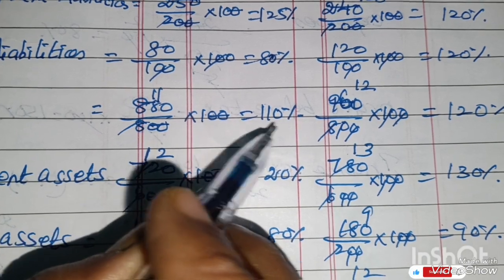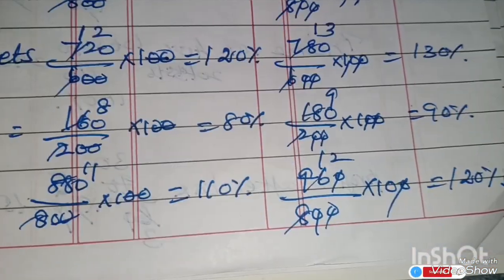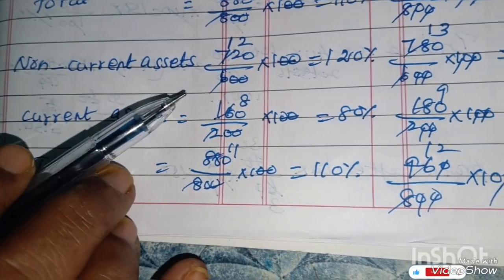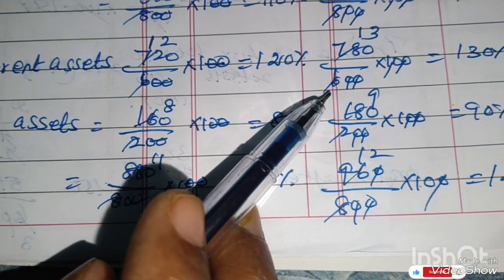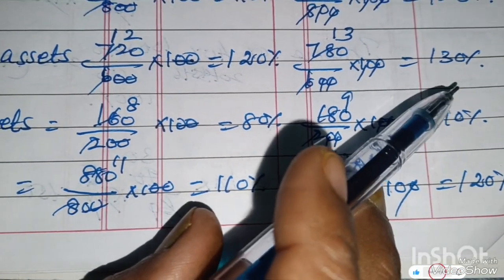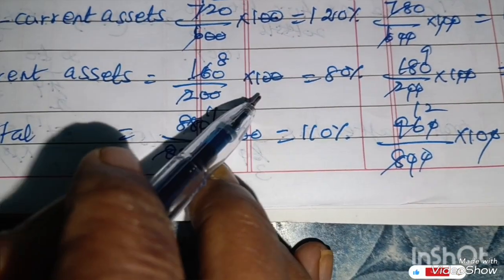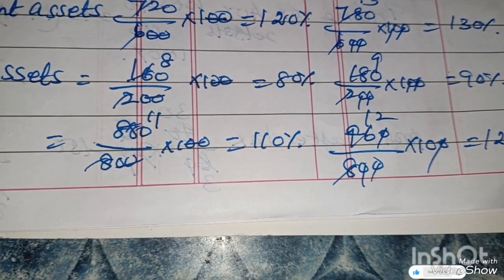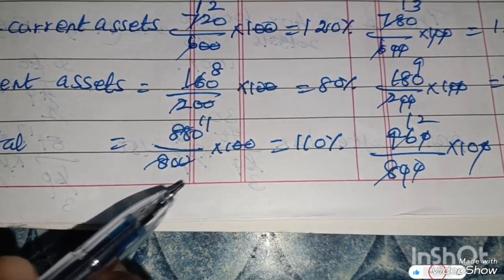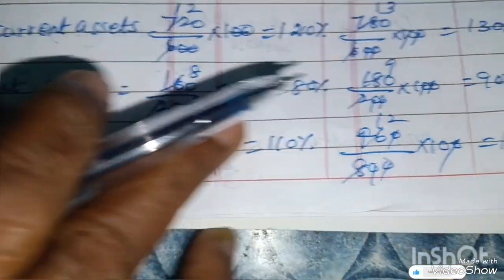Total: 880 ÷ 800 × 100 = 110%. 960 ÷ 800 × 100 = 120%. Non-Current Assets: 780 ÷ 600 × 100 = 130%. Current Assets: 160 ÷ 200 × 100 = 80%. 180 ÷ 200 × 100 = 90%. Total Assets: 880 ÷ 800 × 100 = 110%. 960 ÷ 800 × 100 = 120%.